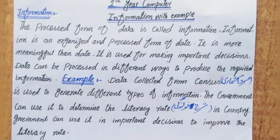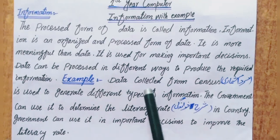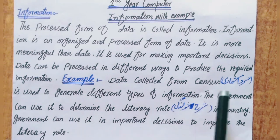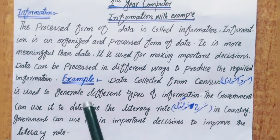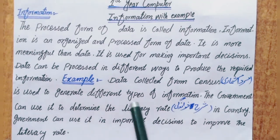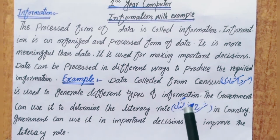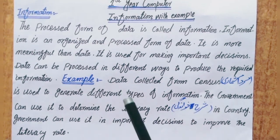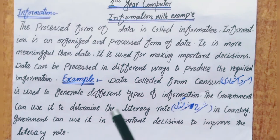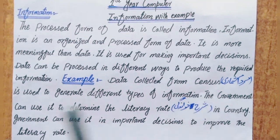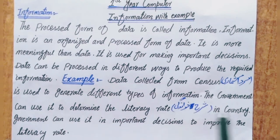Let's take an example. The example is data collected from a census. Data collected from a census can be processed in different ways to produce different types of information. For instance, the government can use it to determine the literacy rate in a country.